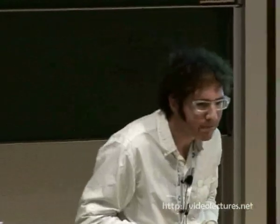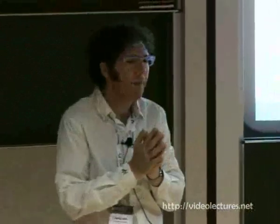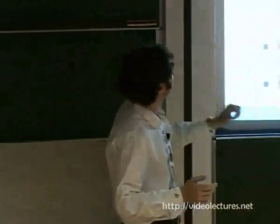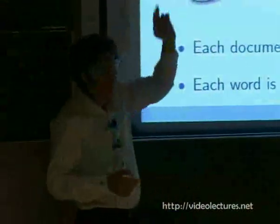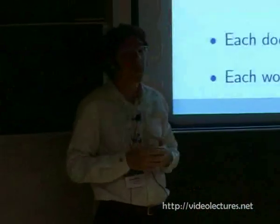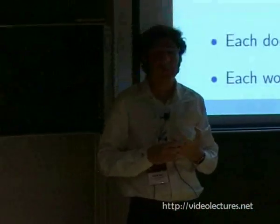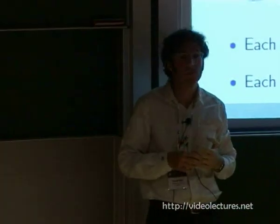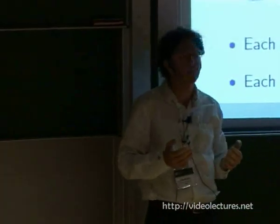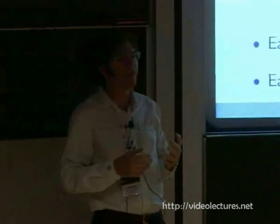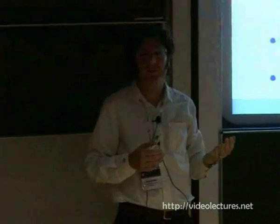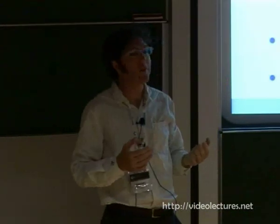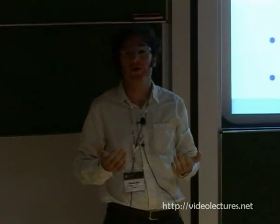An important point: every topic contains a probability for every word. Even though 'data' doesn't have high probability in the yellow topic, it has some probability. A word can have high probability in two topics — for example, the word 'bank' could have high probability in a topic about financial instruments and also high probability in a topic about bodies of water, for river bank.